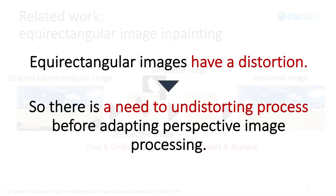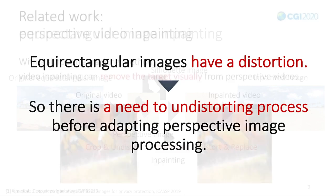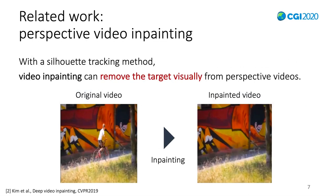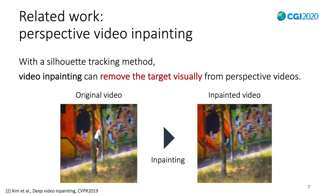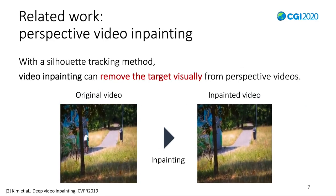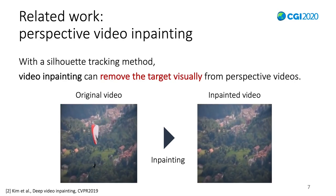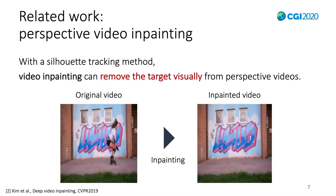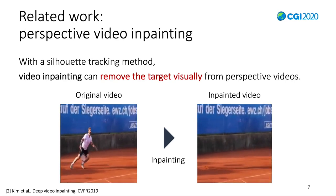Equirectangular images have a distortion, so there is a need for an undistorting process before applying perspective image processing, like this related work. Secondly, I'd like to introduce a video inpainting method. With the target silhouette through whole frames, video inpainting can remove a target visually from perspective videos.